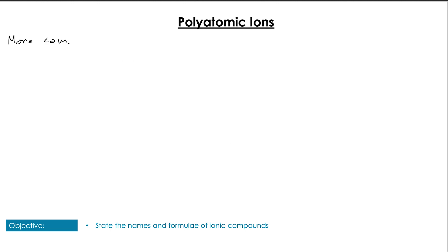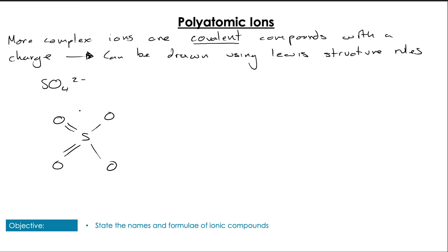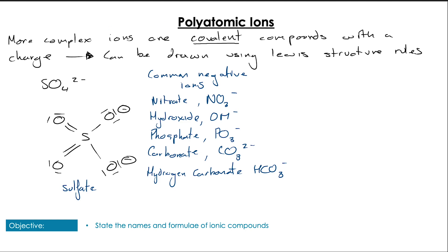Polyatomic ions are a little bit more complex. These are individual covalent compounds that then lose or gain electrons. These can be drawn using the rules we learned earlier in the unit for drawing Lewis structures of molecules and ions. For example, we can draw the sulfate ion, SO4 2-, using those rules. There are also other common negative ions: nitrate, hydroxide, phosphate, carbonate, and hydrogen carbonate. There's a lot fewer polyatomic positive ions - the main one we're going to look at in IB is NH4+, the ammonium ion.